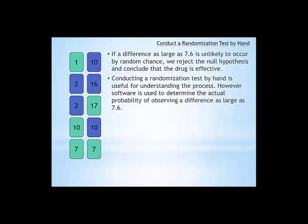If this difference of 7.6 is unlikely to occur by chance, in our three trials we didn't get anything close to 7.6, if it's unlikely we can reject the null hypothesis and conclude that the drug truly is effective.